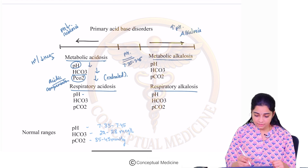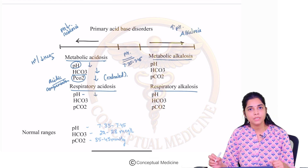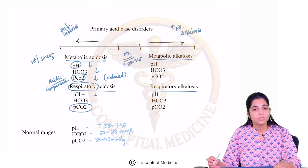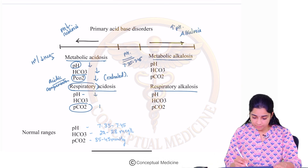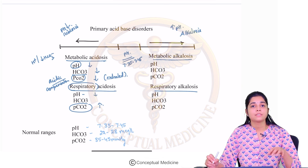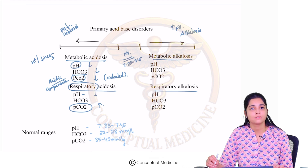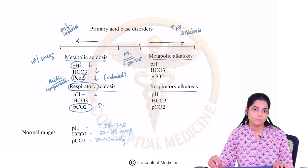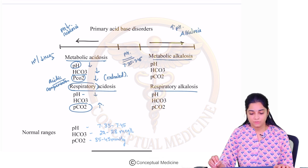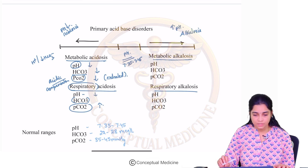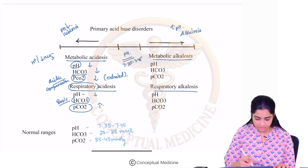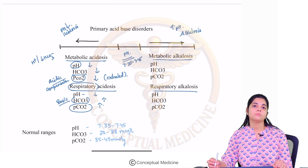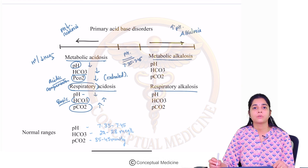Respiratory acidosis: the pH is reduced, and since it's a primary respiratory problem, the PCO2 is high. If there is hypoventilation and carbon dioxide is not being removed, the pH decreases — this is primary respiratory acidosis. Since there is a primary respiratory problem, compensation will be at the kidneys — a metabolic compensation. Bicarbonate is basic, so if there is acidosis, the bicarbonate should start increasing. The kidneys preserve more and more bicarbonate because of the acidosis.